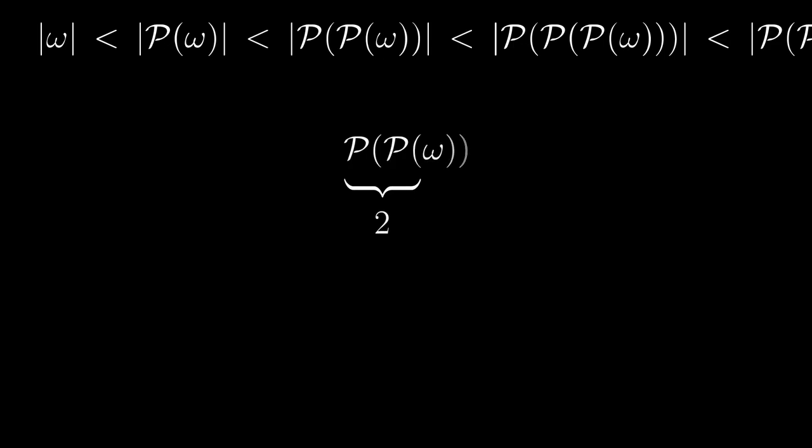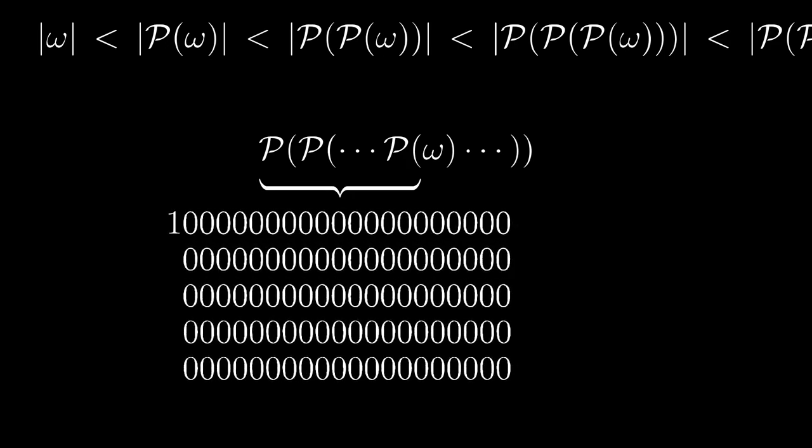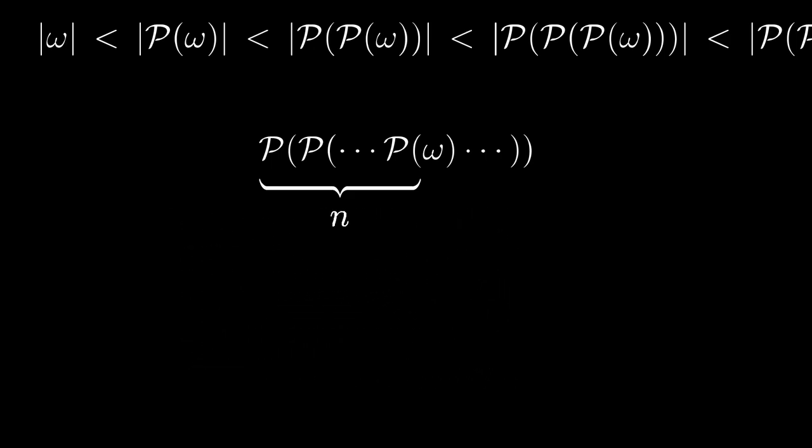For any natural number n we can construct a set created by n iterated applications of P. We can apply it 17 times or even googol times. But is it the best we can achieve?